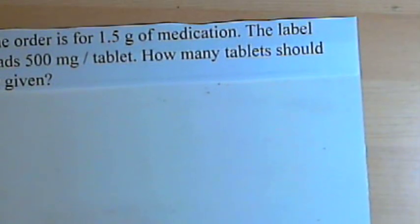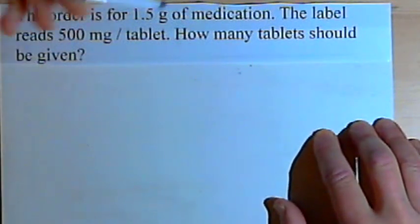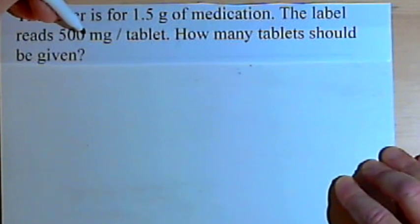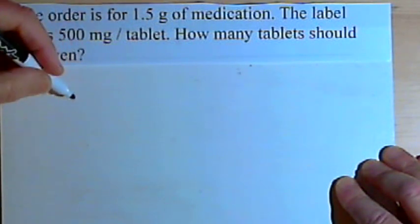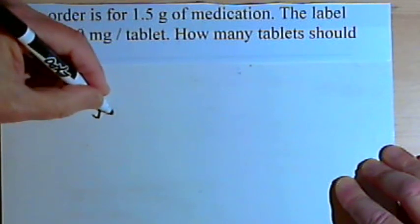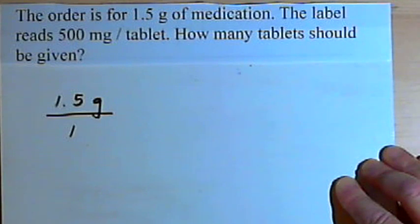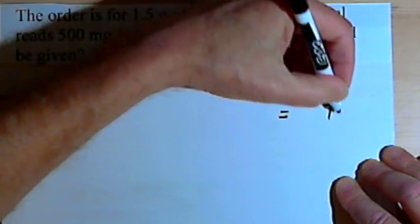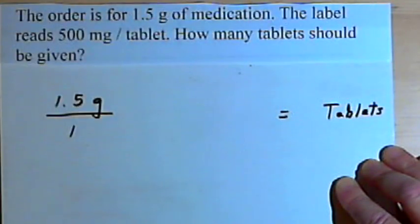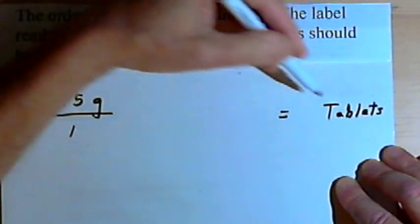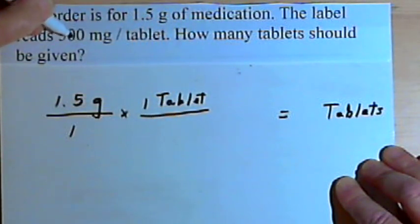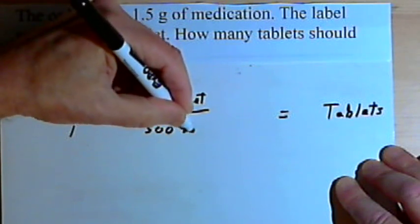Here's another problem. The order is for 1.5 grams of medication. The label reads 500 milligrams per tablet. How many tablets should be given? We start out with 1.5 grams over 1. We want to turn this into tablets, so I'll put in my equal sign, a space for the number of tablets, and write the unit tablets. My information tells me the label reads 500 milligrams per tablet, so I make a fraction with one tablet in the numerator and 500 milligrams in the denominator.